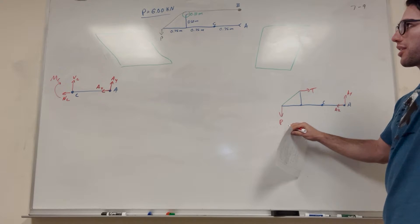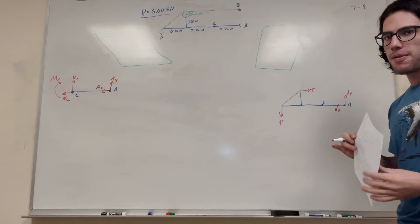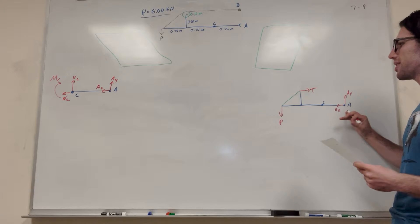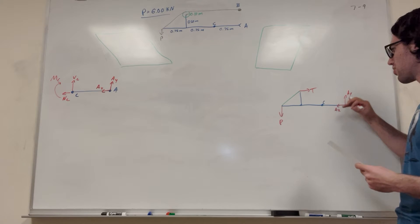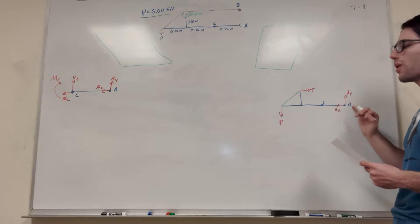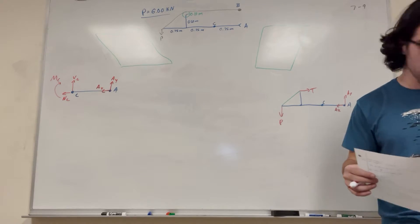So we know P. P is the only thing we know here. So we want to find tension, A_x, and A_y. So if we want to find tension, tension is going to allow us to find A_x. So let's take the moment around A. If we take the moment around A, that will allow us to find tension. Now if we have tension, we can find A_x, and we can find A_y, and then we can solve that. That's the order of operations here. That's what we're trying to figure out.